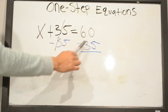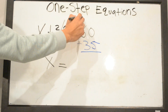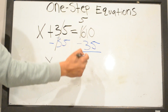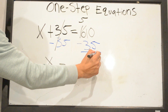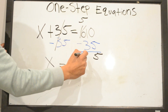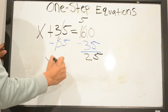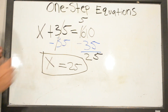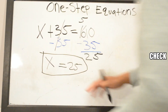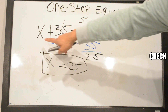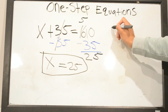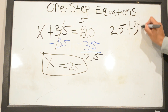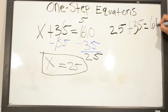60 minus 35: since 0 minus 5 you cannot, you have to borrow — this becomes 10, 10 minus 5 equals 5. Then 5 minus 3 equals 2, so X equals 25. To check your work, plug in 25 for X: 25 plus 35 equals 60.